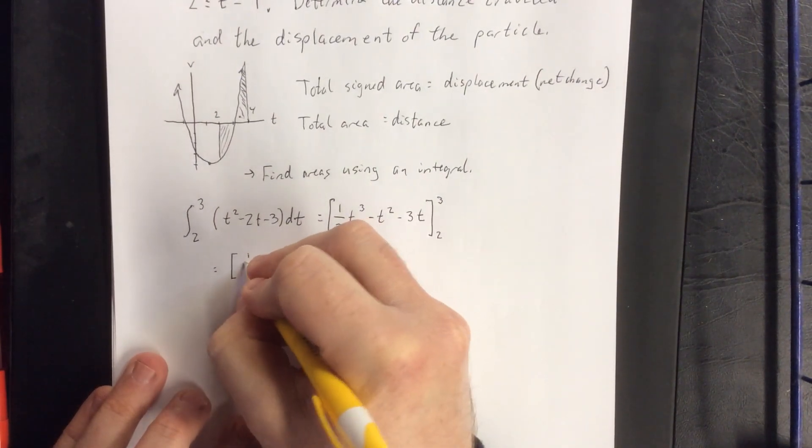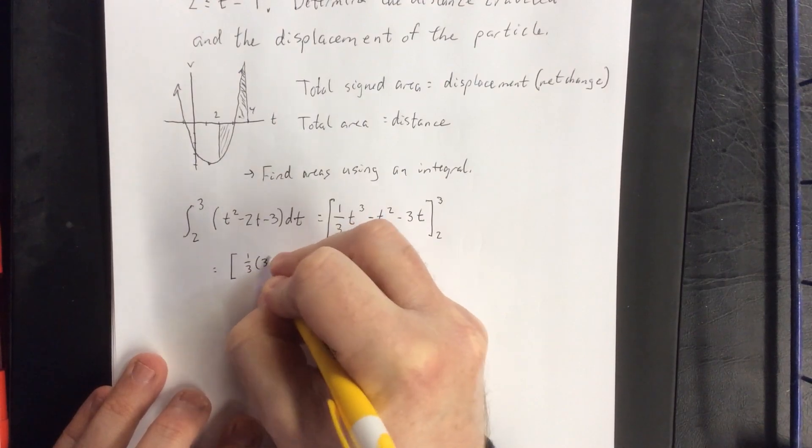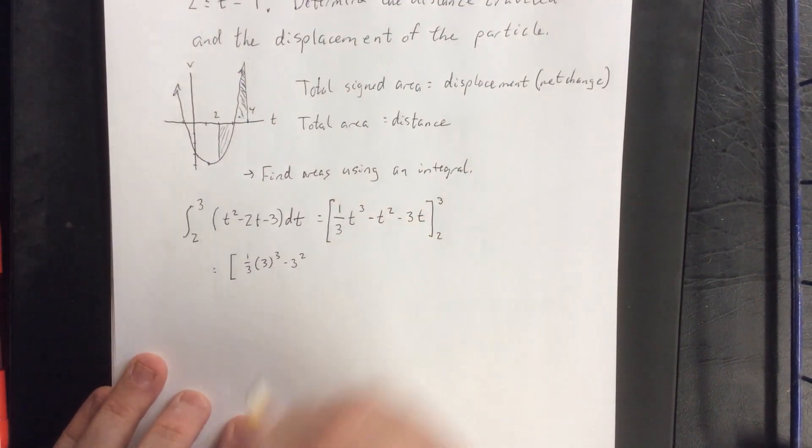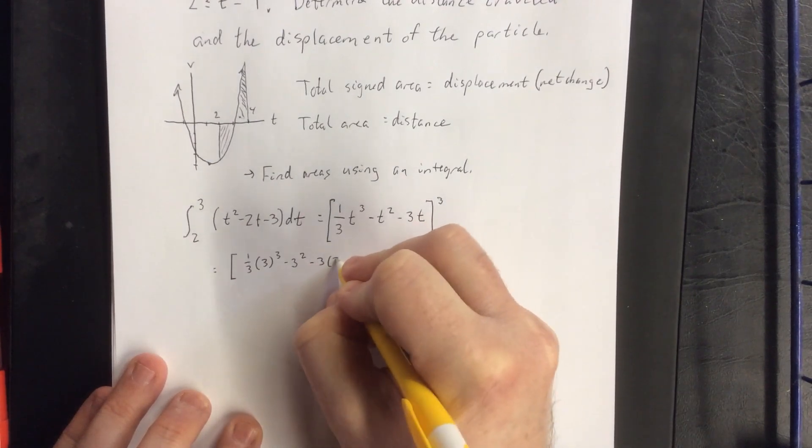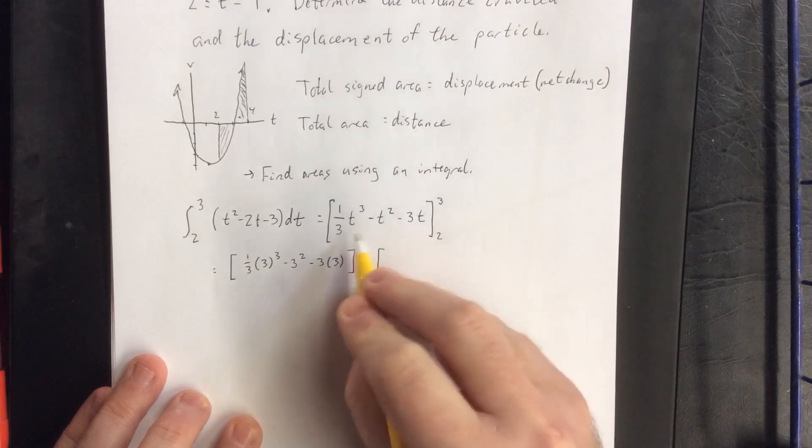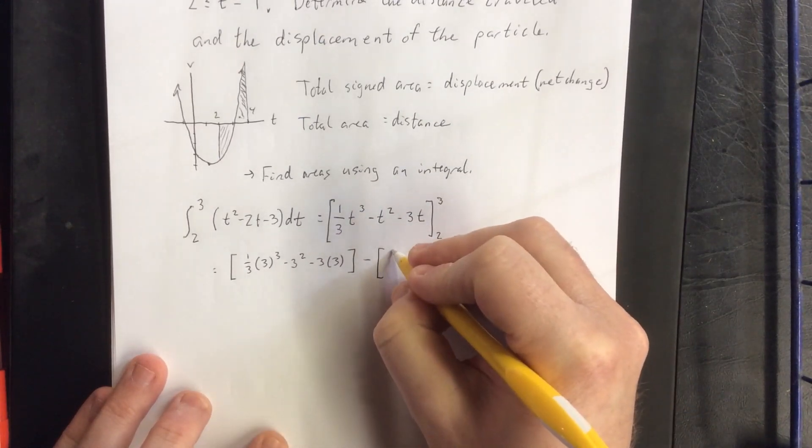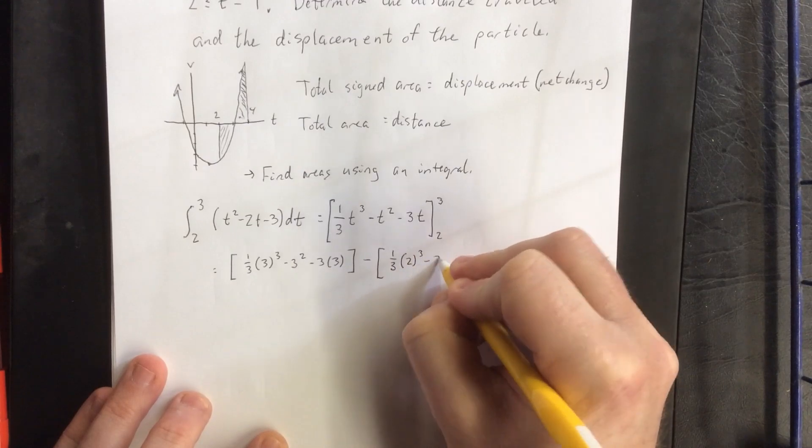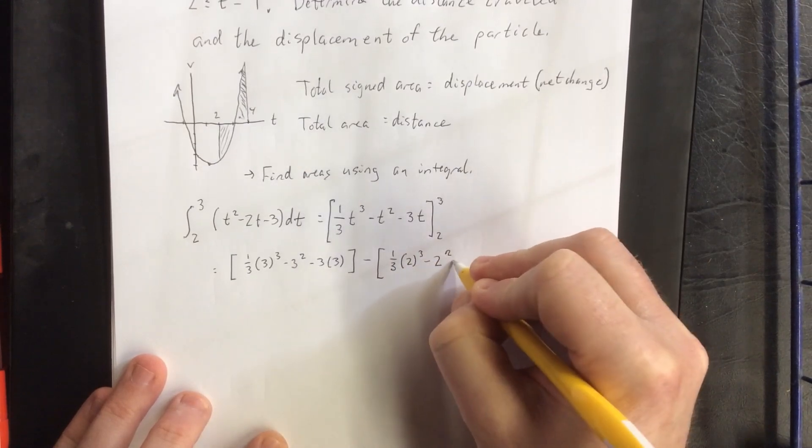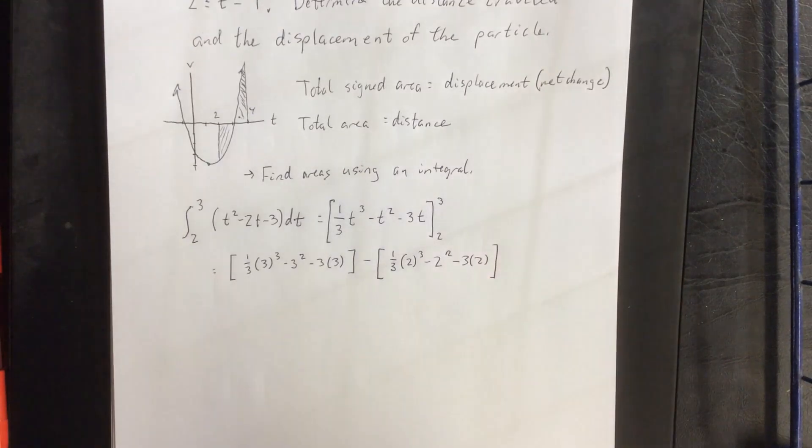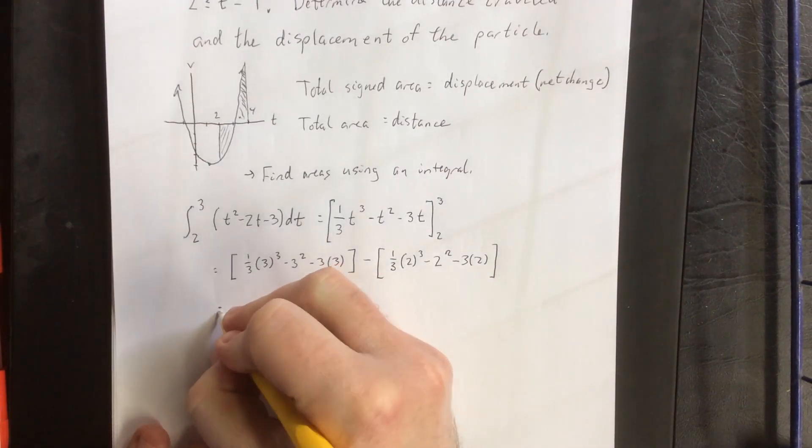So that will be ⅓(3³) - 3² - 3(3) minus what we get when we plug in 2. So that'll be ⅓(2³) - 2² - 3(2). If at this point you're interested in using a calculator to assist with the simplification, that's fine.